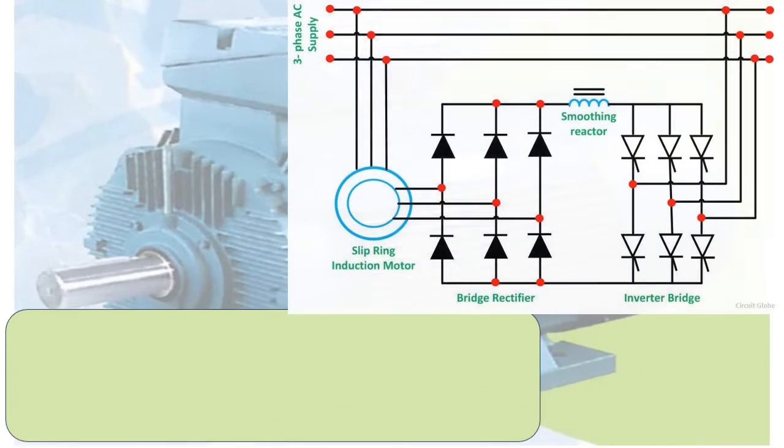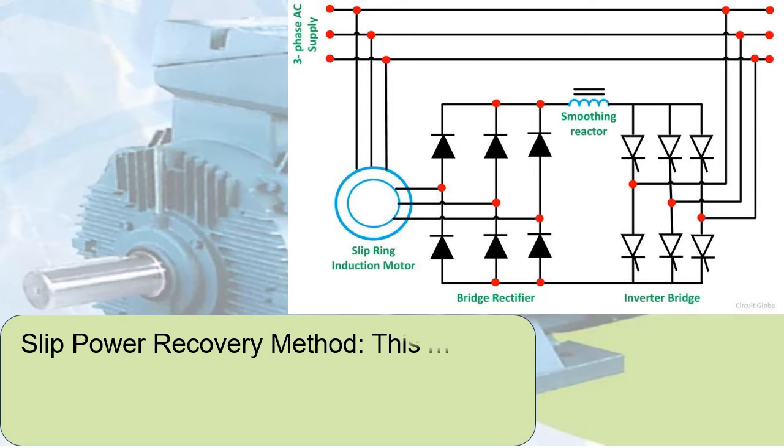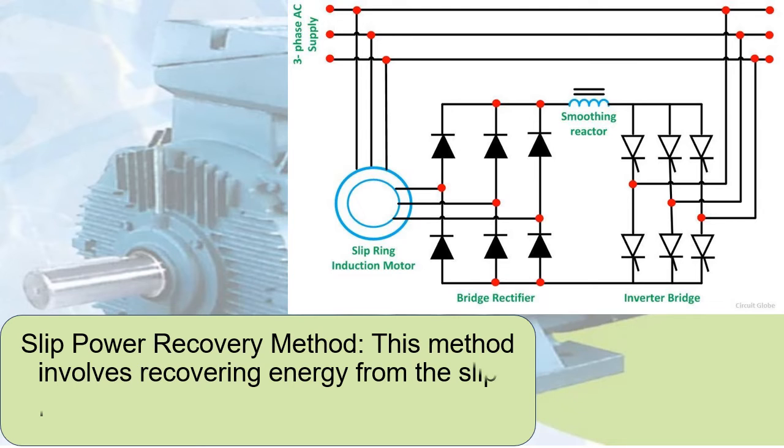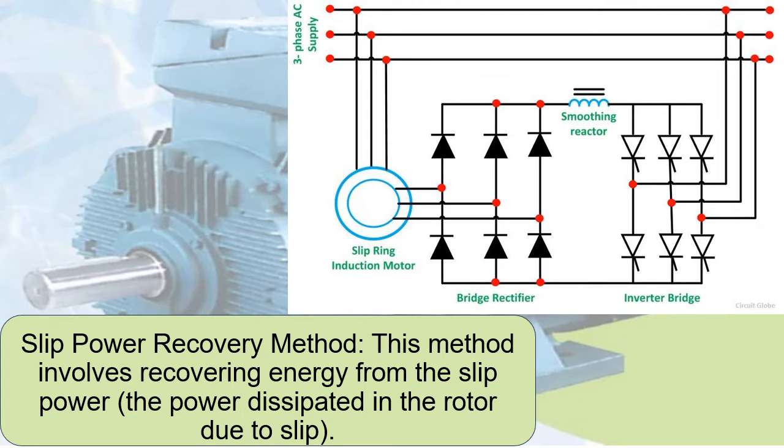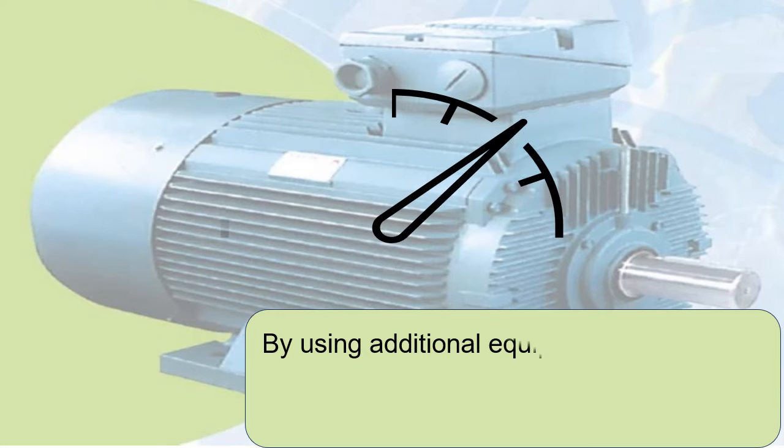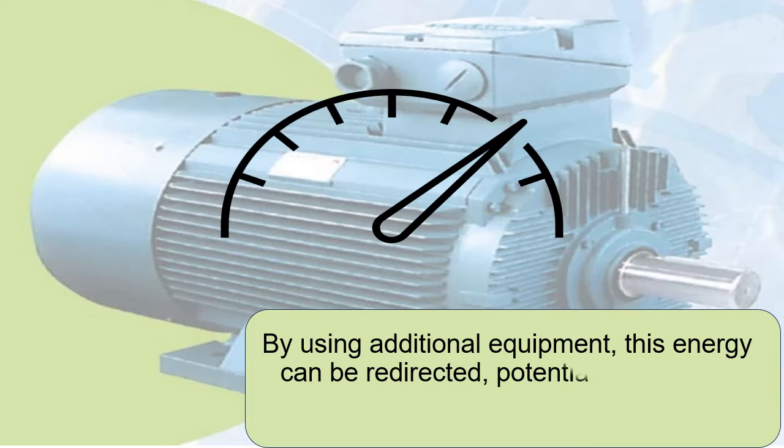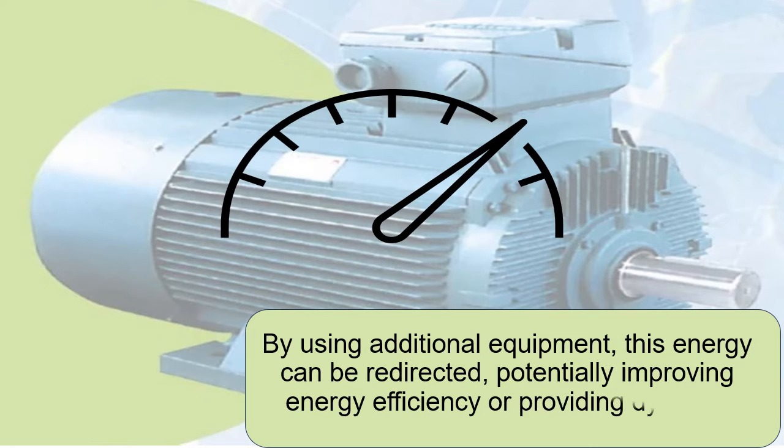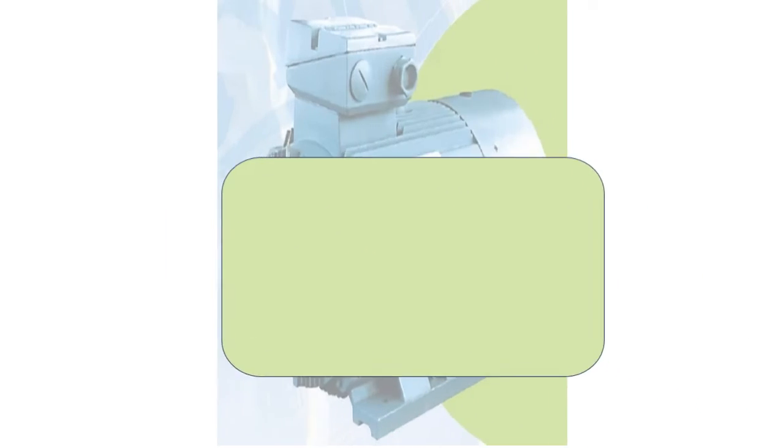Slip Power Recovery Method: This method involves recovering energy from the slip power, the power dissipated in the rotor due to slip. By using additional equipment, this energy can be redirected, potentially improving energy efficiency or providing dynamic braking.